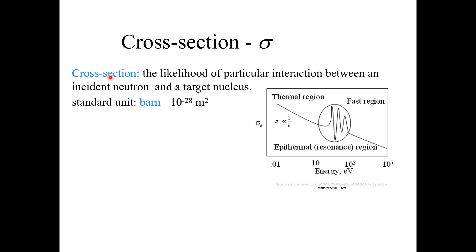So what are cross-sections and why are they important with materials? The cross-section is the likelihood of a particular interaction between an incident neutron and a target nucleus. This is the most simple definition of cross-sections.